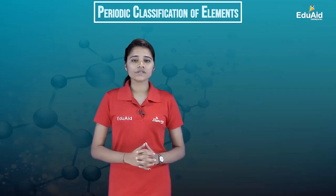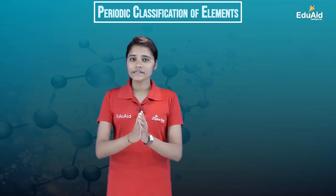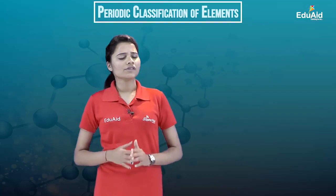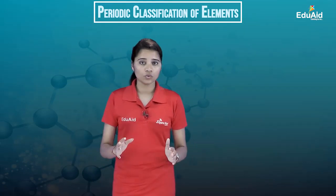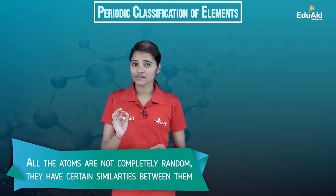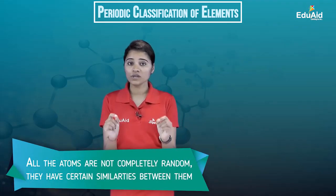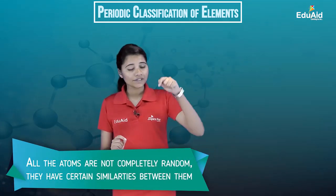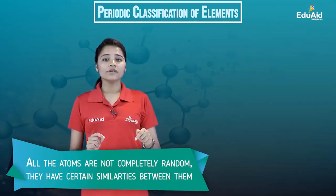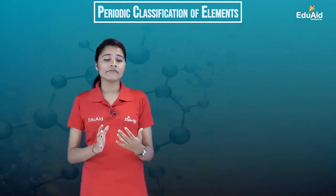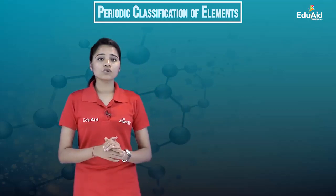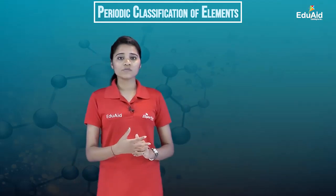Our entire universe is made up of 119 elements. Are they completely random? No. You'll find that they have got some similar properties, and it is based on the similarity in properties that scientists were able to classify and arrange them in different ways. Let us now go through the different attempts made by different scientists to arrange these elements.